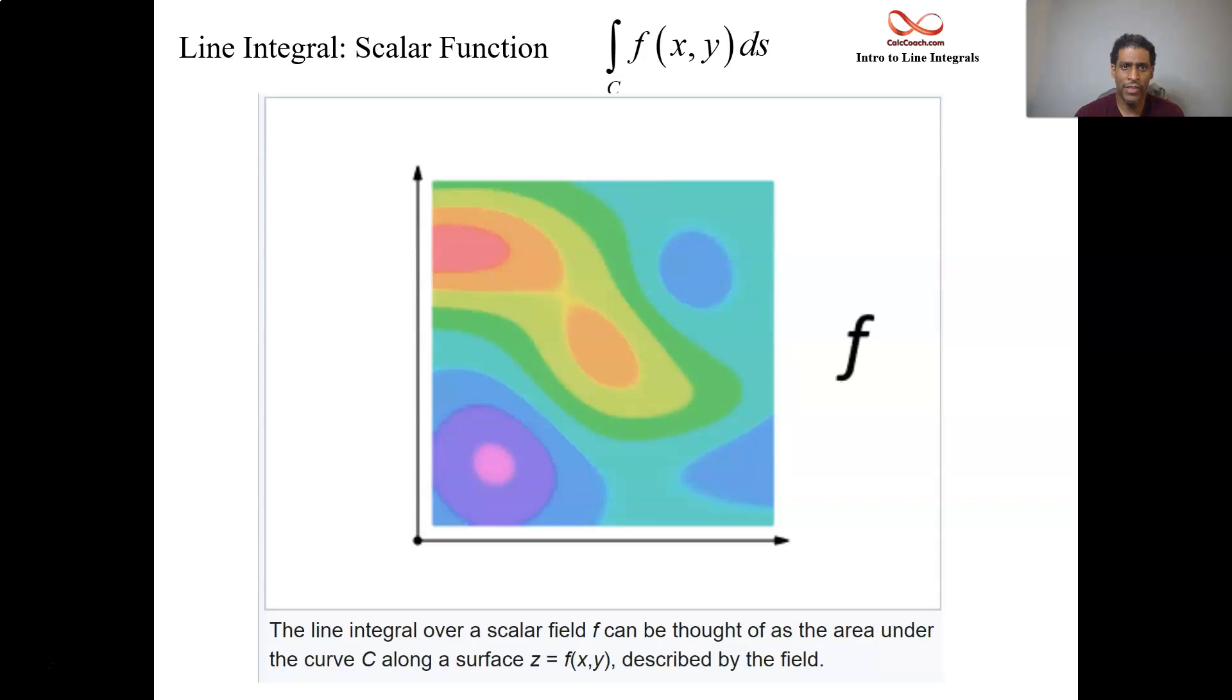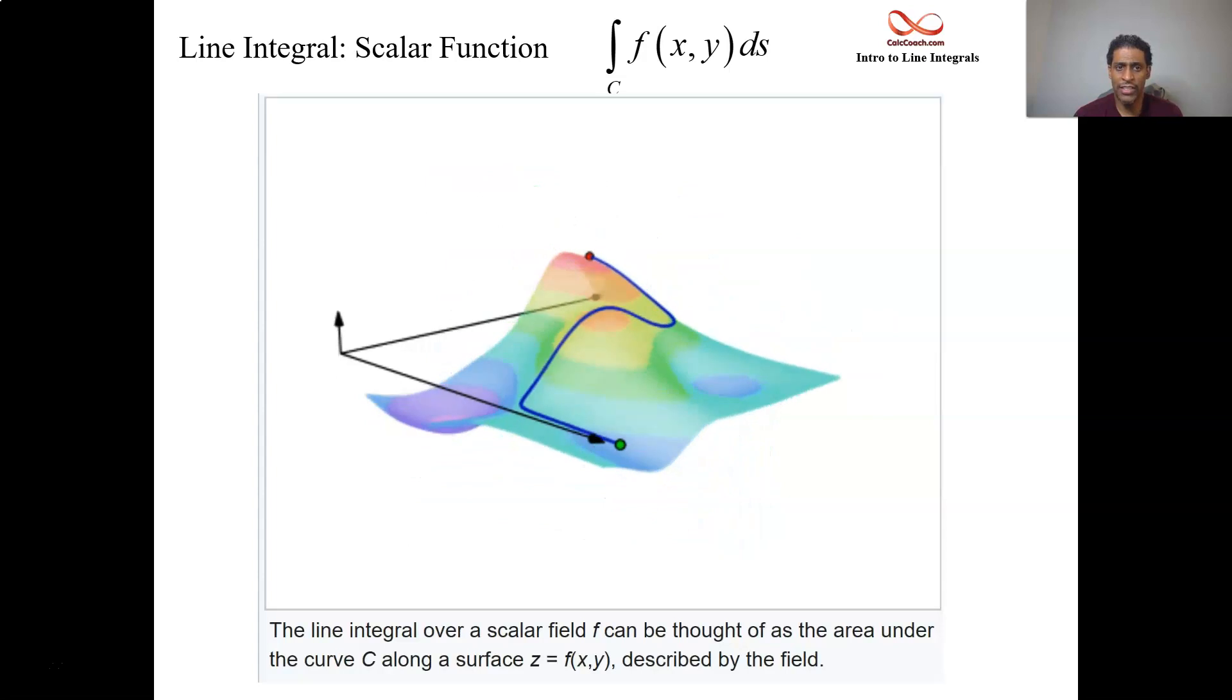All right. So f is this function, turned on its side. So if we have a curve C, we're going to turn it on its side to see C lift it up to our surface.